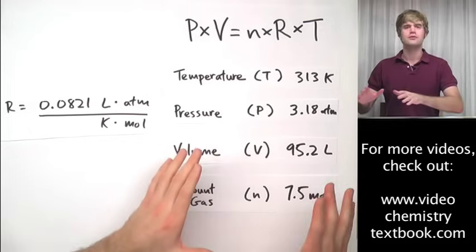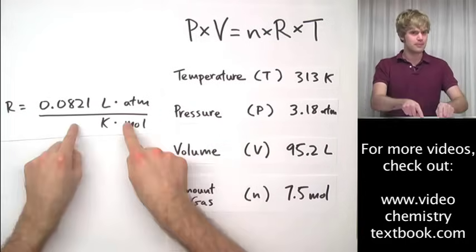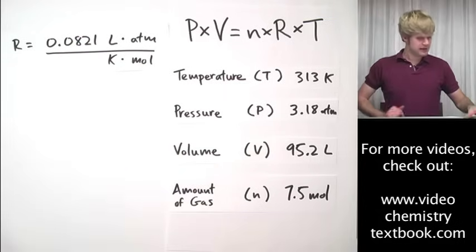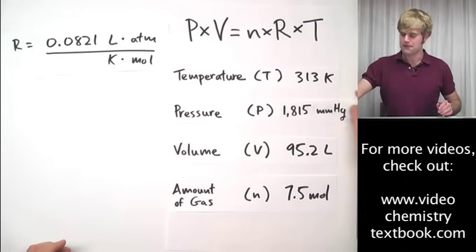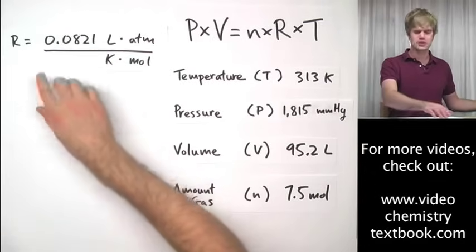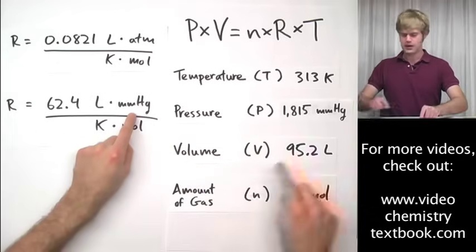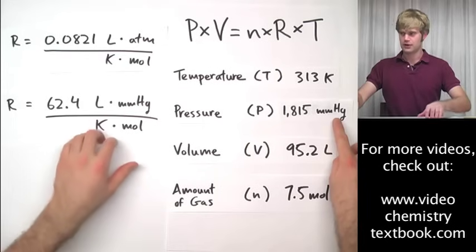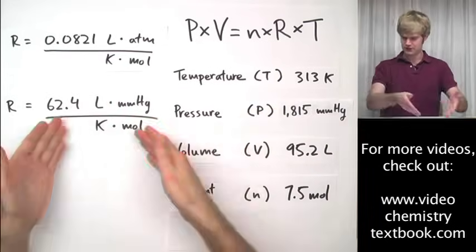So because you always want the units to match, there are also different values of R, although I'm going to be using this mostly for the videos I'm doing. For example, let's say that instead of atm I was using a pressure that was in millimeters of mercury. In this case, I wouldn't want to use this R here, I want to use this R here so that the units match, millimeters of mercury here, millimeters of mercury here, and the number is different, 62.4.